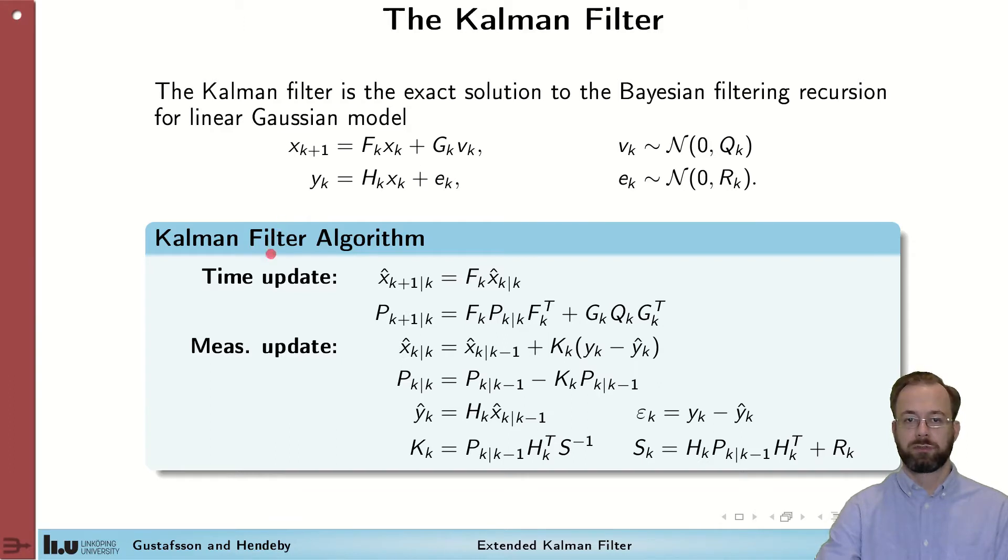With this, we get a two-stroke engine for state estimation that contains a time update step, in which we predict the state for the future and how uncertain we will be about it. In this step, we actually lose information as we don't know what's going to happen in the future, so we get larger uncertainty than we started with. In the second step, we have the measurement update, which incorporates measurements into the state knowledge. That way, we also bring down the uncertainty.